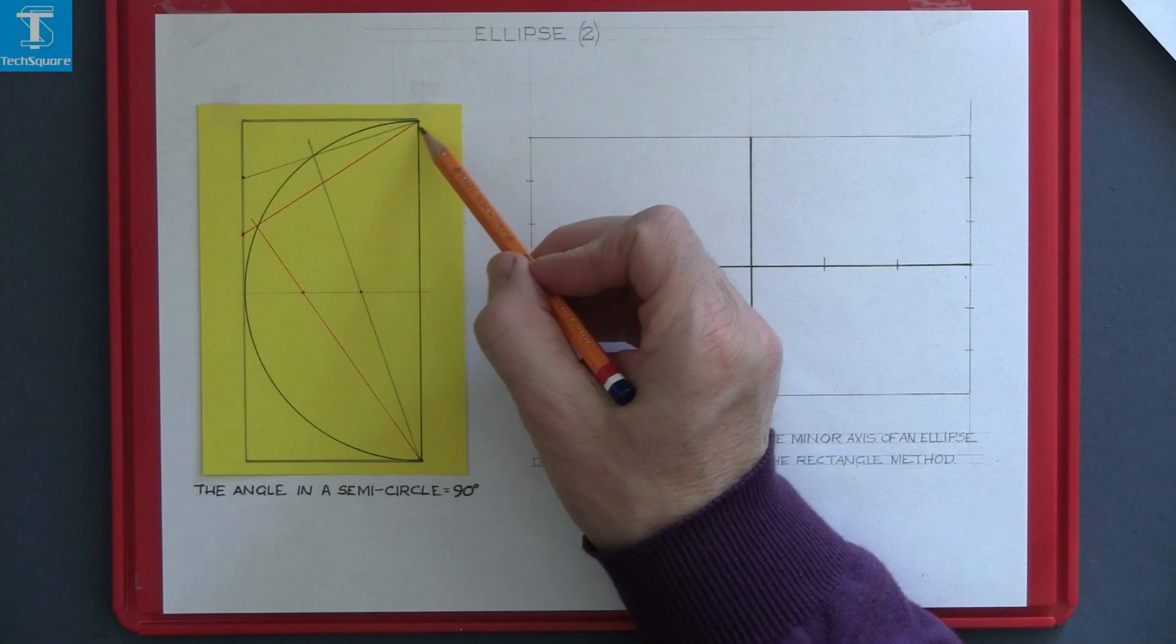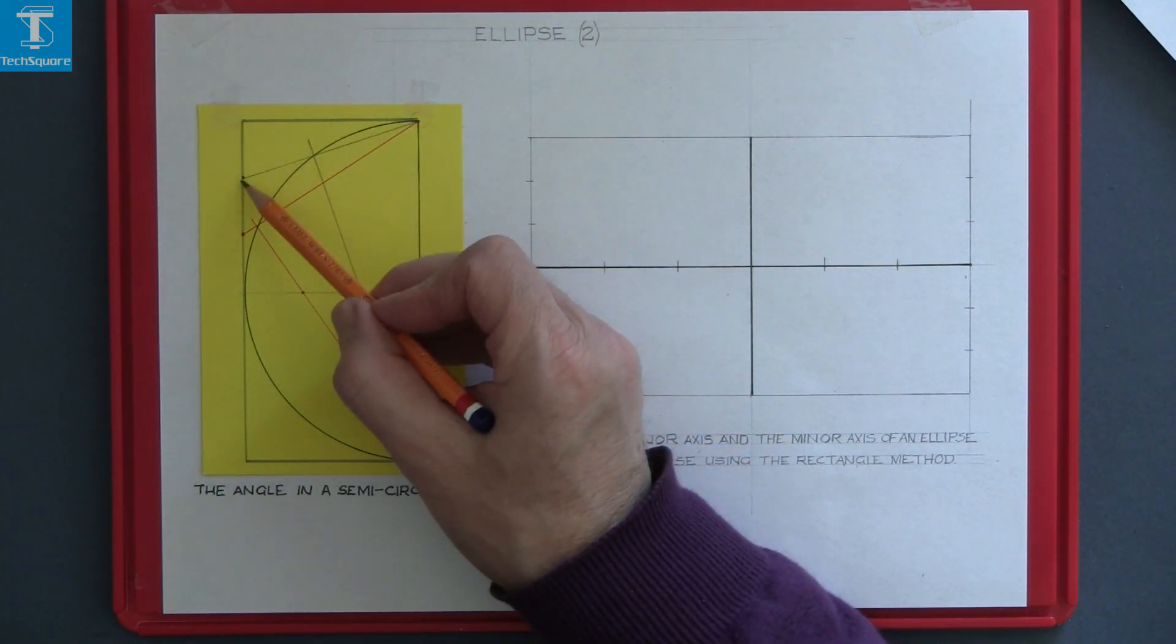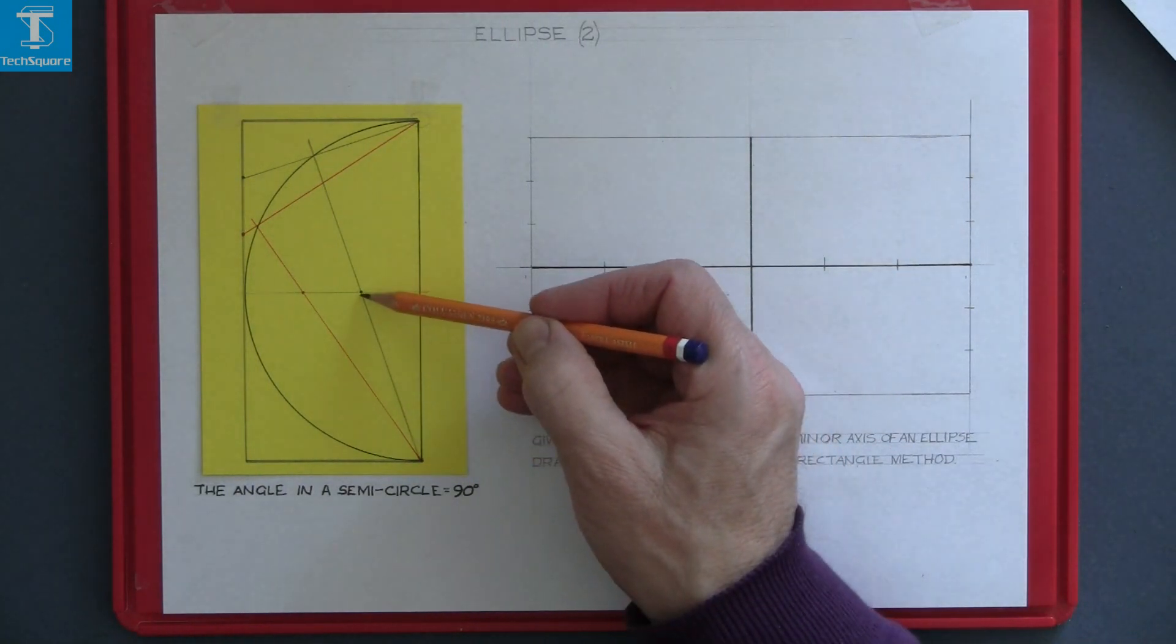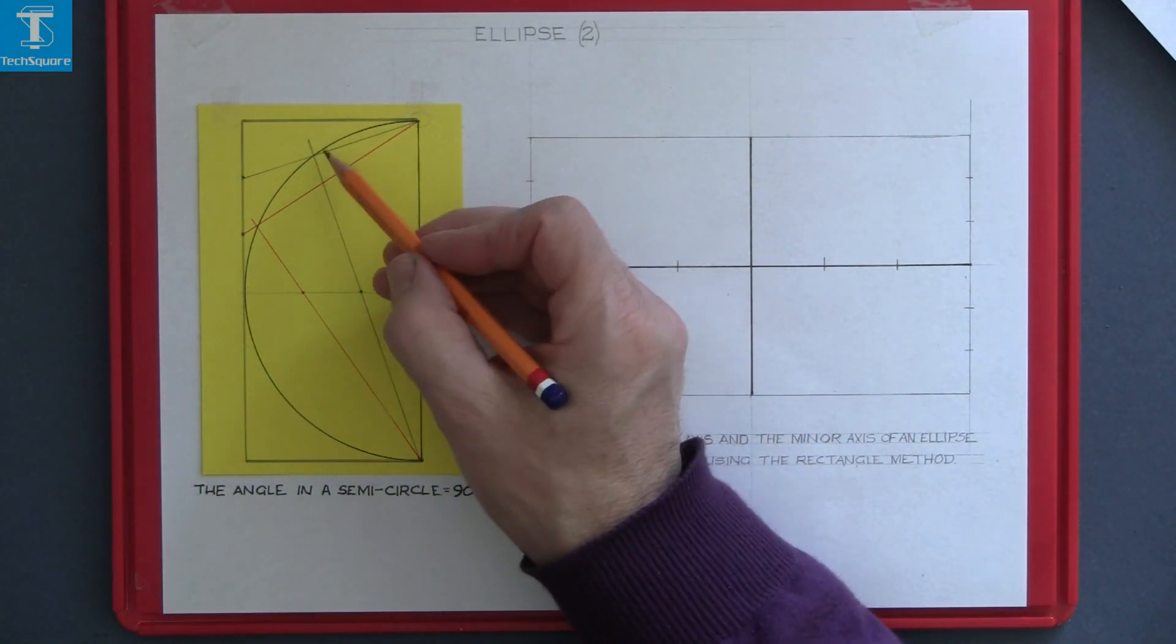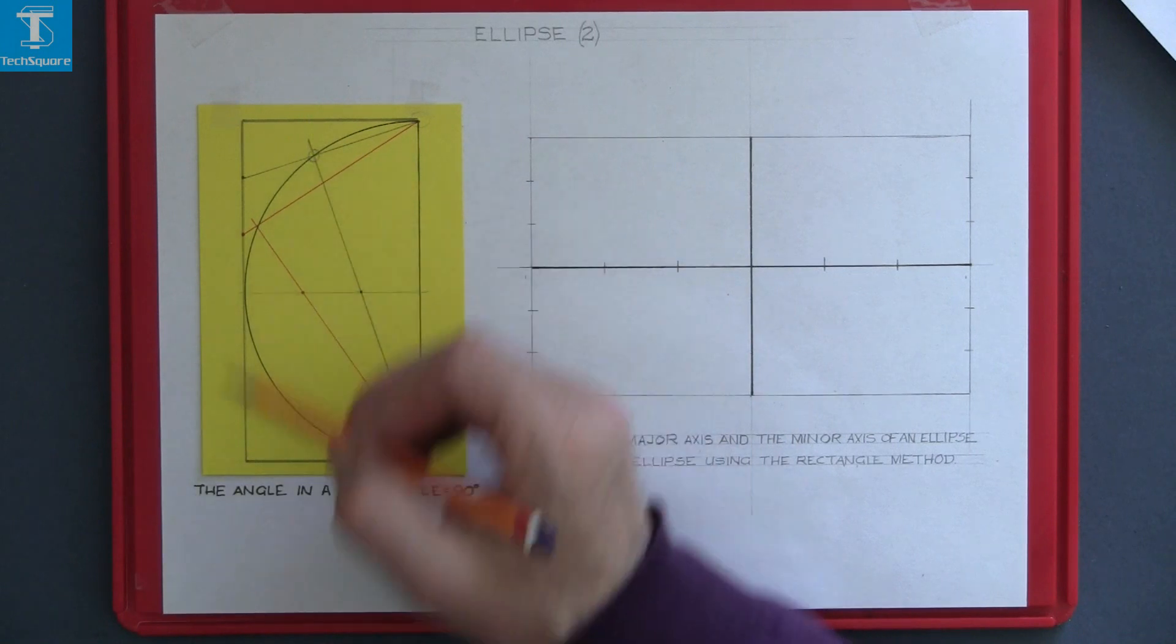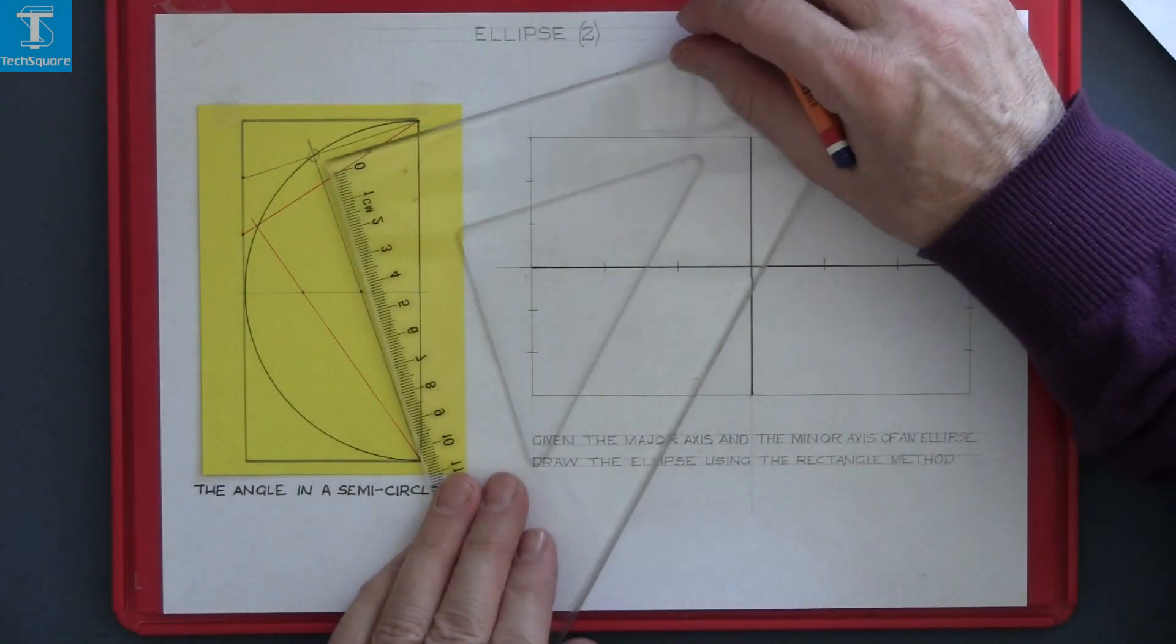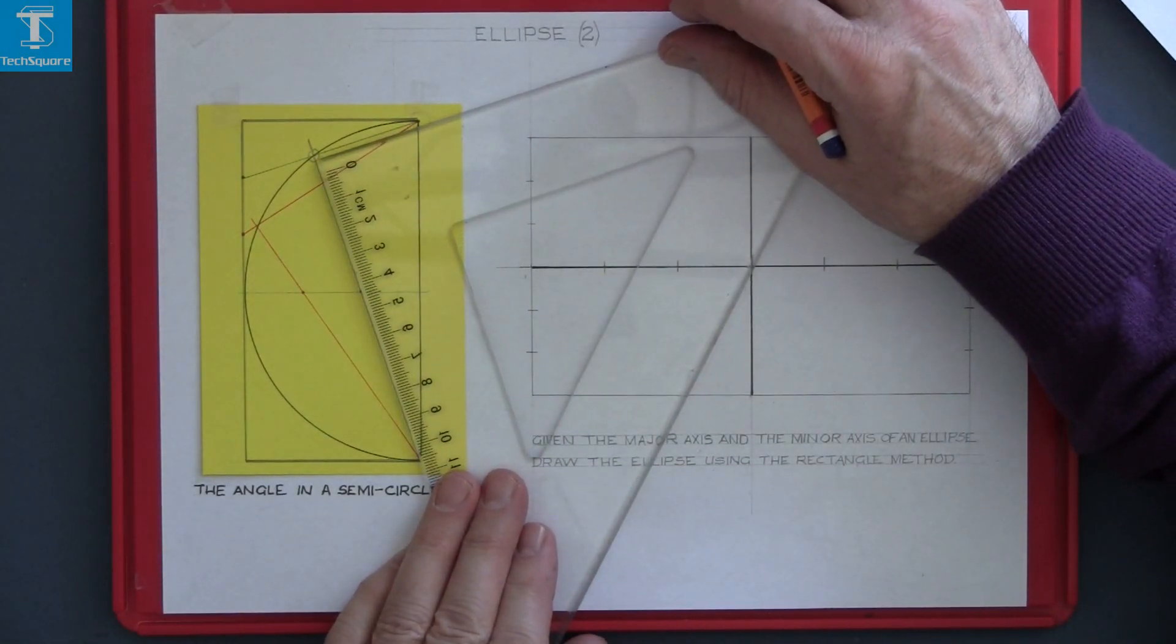I've drawn from the top point here to the first point and I've drawn from the bottom point here through the first point here and that gets me a point on the circle. In fact that's a 90 degree angle. That's the angle in a semicircle.